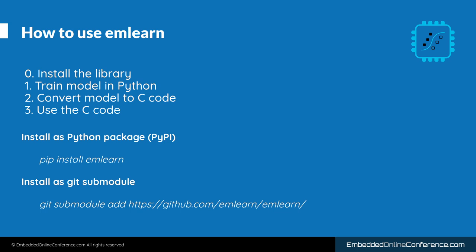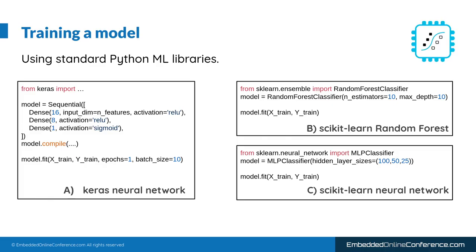Now we will quickly show how to use emLearn. The library can be installed either as a Python package or be included as a git submodule in your project. Training a model is done using a standard framework like scikit-learn or Keras. You will need to already have a dataset collected and labeled in order to do this. There's nothing emLearn-specific about the training process, although you must use a model which is small enough to fit on your target device. We provide some tools that help you to check this.